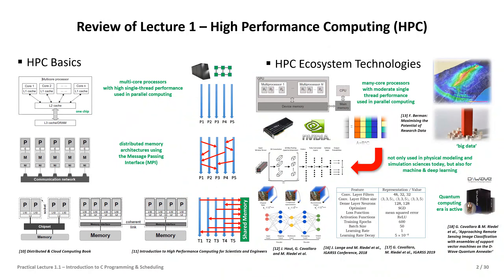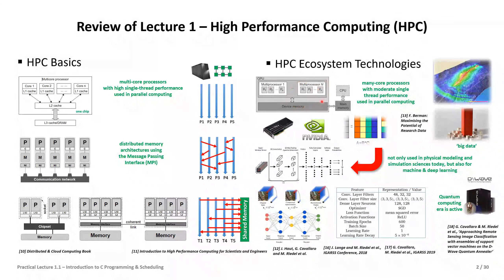The next part covered HPC ecosystem technologies. A problem with CPUs today and in the past is that putting more high-frequency cores on a chip generates too much heat. One idea is to create a many-core processor instead, which has hundreds of thousands of cores but only at medium performance. Hence they don't get as hot, and you can put more and more on the chip.